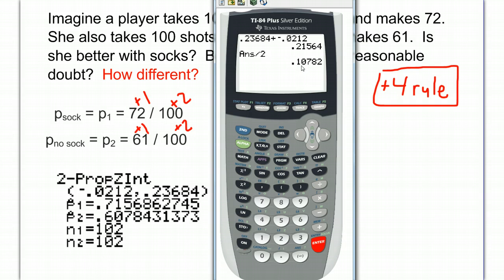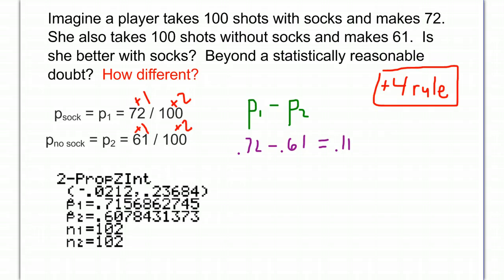And if I round that off to three decimals, then 0.108. So let's write that in. That's going to be our middle.